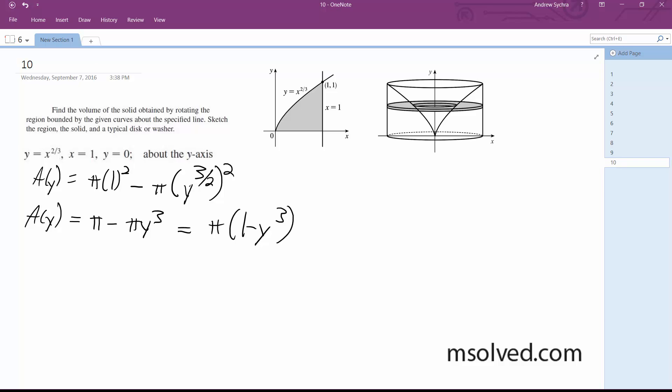So I'm gonna go ahead and integrate this. The volume in this case is going to be equal to pi, from 0 to 1, 1 minus y cubed dy.